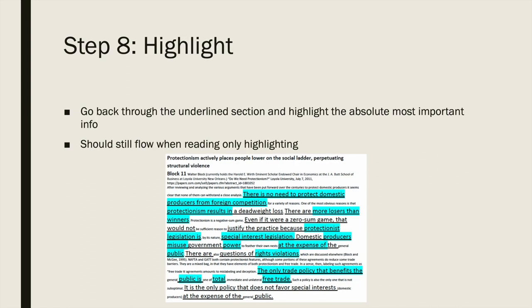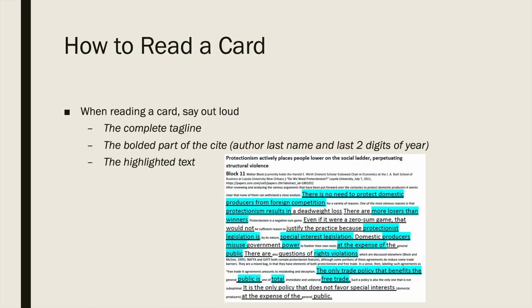The next step is to highlight. Now that you know what the evidence needs to say — based on the tag you wrote — you can go back through the underlined section and highlight only the absolute most important information. It should still flow when reading only the highlighted parts. Just like when you were underlining, keep in mind whether reading these words together in series without the in-between stuff still makes decent sense. At that point, you have a card. The image on screen is a complete cut piece of evidence.